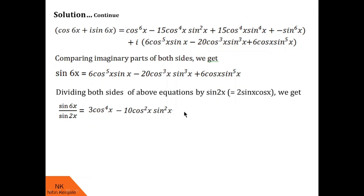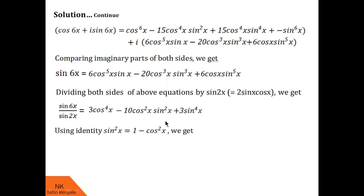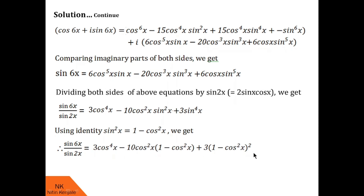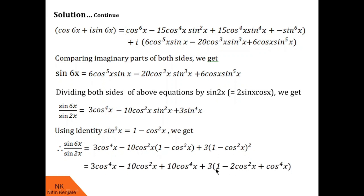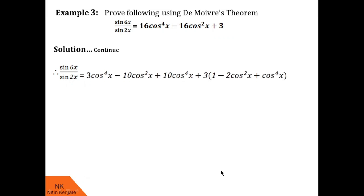The next term gives 3sin⁴x. So sin 6x / sin 2x = 3cos⁴x − 10cos²x·sin²x + 3sin⁴x. But if you go back, this is not yet the required RHS — all terms in the required RHS are cosine terms. So we replace sin²x with 1 − cos²x. After replacing, we open the bracket and take 10cos²x inside; we also expand (1 − cos²x)² using the (A − B)² formula: A² − 2AB + B². After opening and simplifying we get this expression.